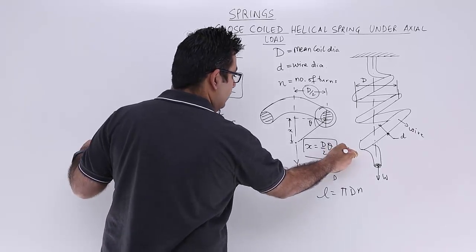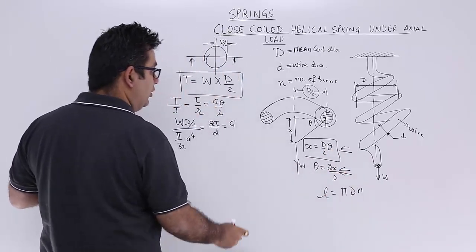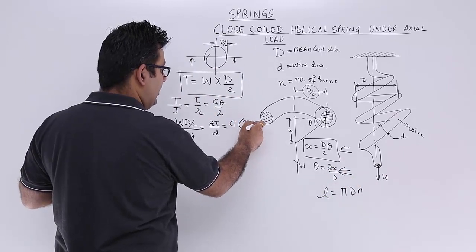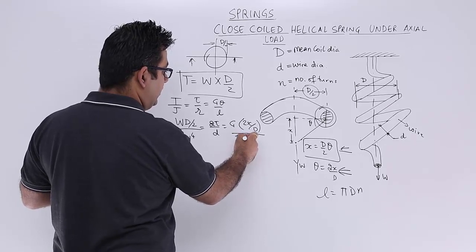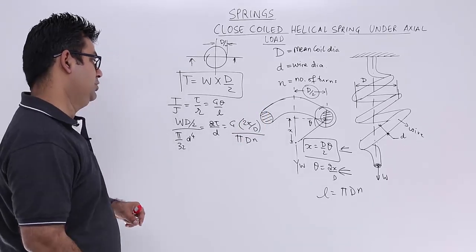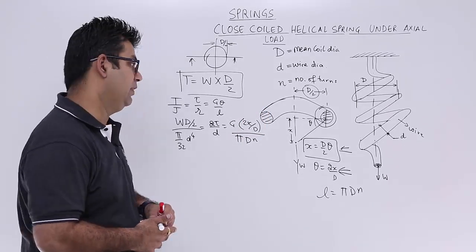Now what is theta? Theta I have already found out. So this is 2x upon D, 2x upon D upon you have pi D N. So this is what you have achieved up till now.